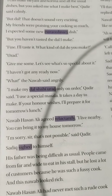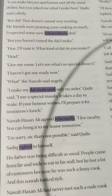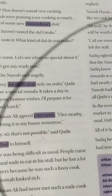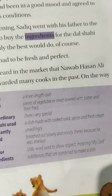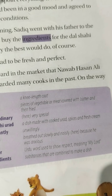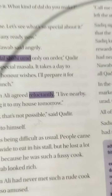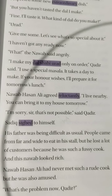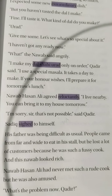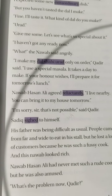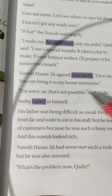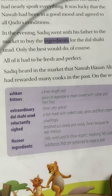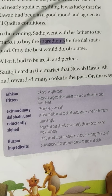Children, dal sahi urad means a dish made with cooked urad, spices and fresh cream. "I am sorry, sir, that's not possible," said Father. Sadiq sighed to himself. Children, this highlighted word: sighed means breathed out slowly and noisily because he was anxious.